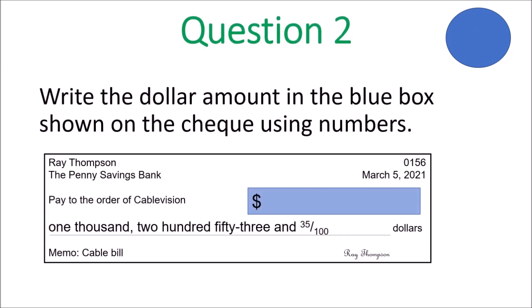We move on to question 2. Write the dollar amount in the blue box shown on the check using numbers. Go ahead, look at the check. In that blue box, write the amount shown in dollars and cents. Get that one done, grade 6.